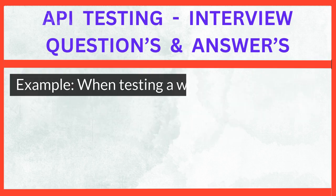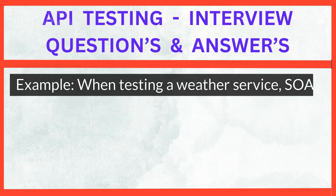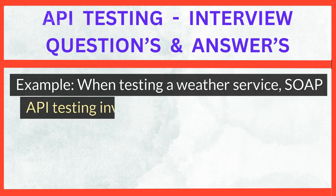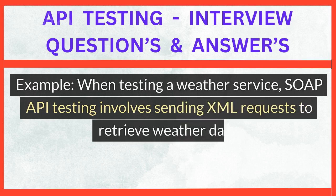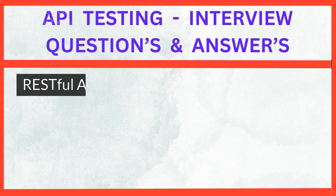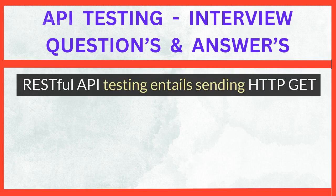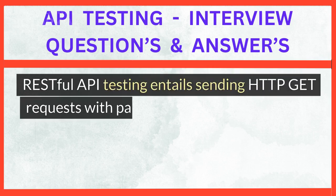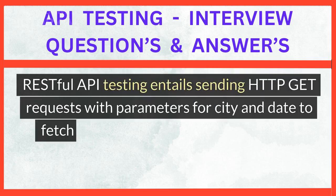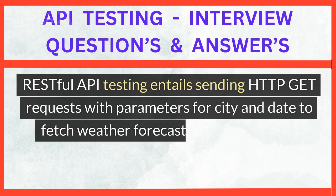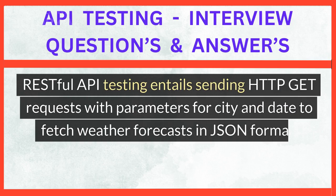When testing a weather service, SOAP API testing involves sending XML requests to retrieve weather data. RESTful API testing entails sending HTTP GET requests with parameters for city and date to fetch weather forecasts in JSON format.